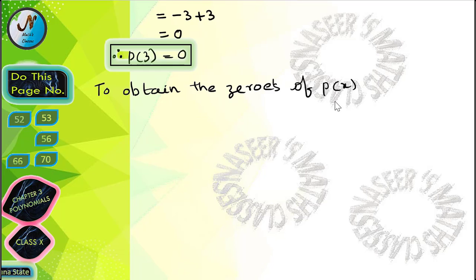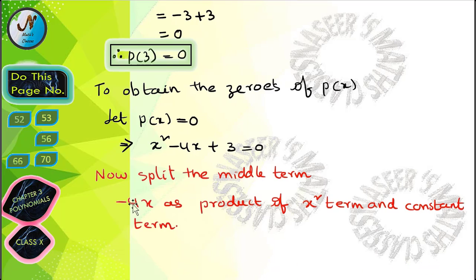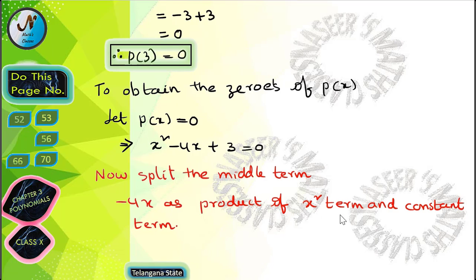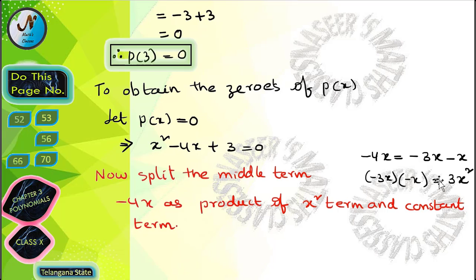To obtain the zeros of p(x), let p(x) = 0. Therefore we write x² - 4x + 3 = 0. Now we split the middle term -4x as the product related to the x² term and constant term. So -4x is written as -3x - x.